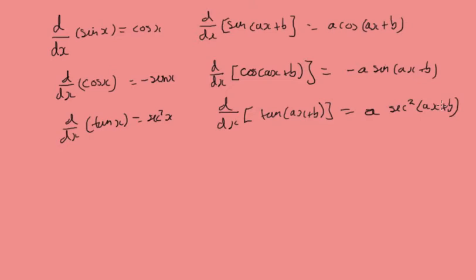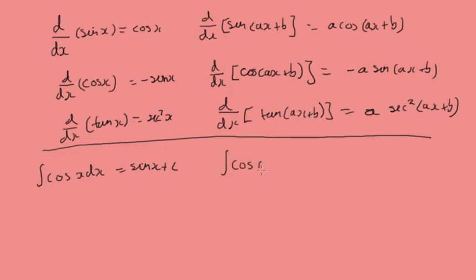As we know that the integral is the opposite of the derivative, by reversing these processes we come up with the integrals. The integral of cos x dx is sine x plus c. And similarly, the integral of cos(ax + b) dx is 1 over a sine(ax + b) plus c.